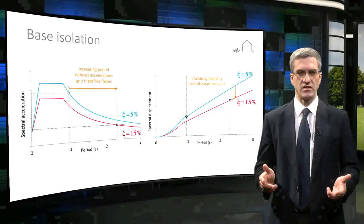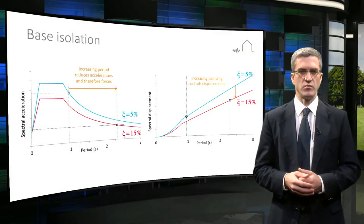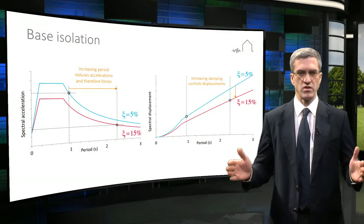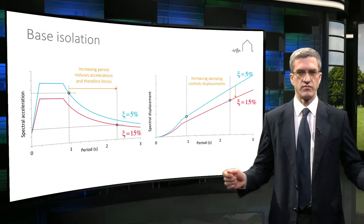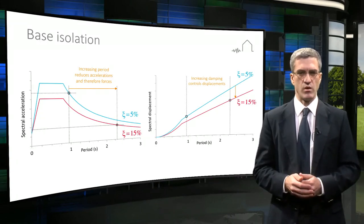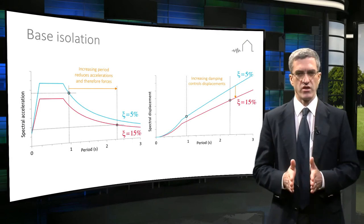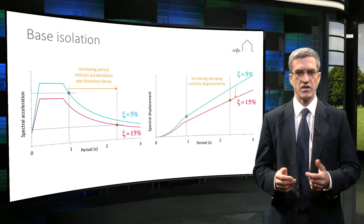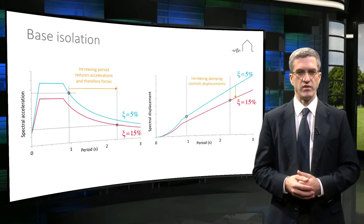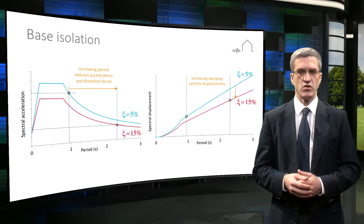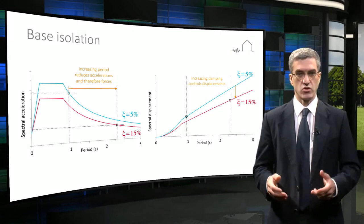Base isolators have to safely accommodate the large horizontal displacements, which can be up to one metre in high seismic zones. In the Groningen region, however, the likely displacements are in the range of 50 to 200 millimetres. Base isolation is very effective for buildings that have short periods of vibration, but it is not effective for long-period structures such as tall buildings.